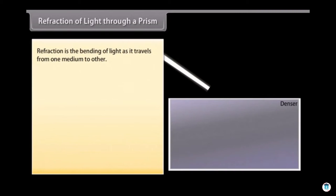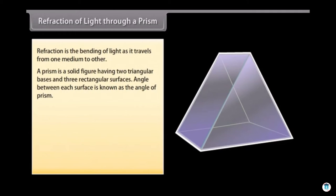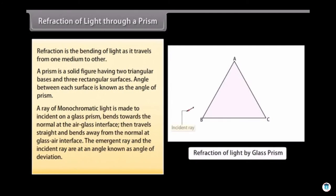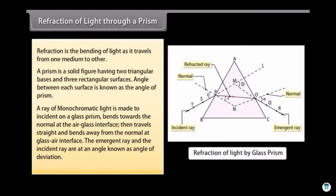Refraction is the bending of light as it travels from one medium to other. In this section we shall discuss the phenomenon of refraction by a glass prism. A prism is a solid figure having two triangular bases and three rectangular surfaces. Angle between each surface is known as the angle of prism. A ray of monochromatic light is made to incident on a glass prism, bends towards the normal at the air-glass interface, then travels straight and bends away from the normal at glass-air interface. The emergent ray and the incident ray are at an angle known as angle of deviation.